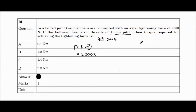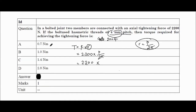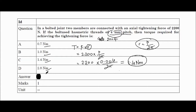The radius value will be p upon 2π. So the torque = force × (p/2π). Solving: 2200 multiplied by pitch, which is given as 4mm. Since answers are in Newton-meters, convert directly: 0.004 divided by 2π. Calculating this gives the correct answer as 1.4 Newton-meters. The correct answer is C.